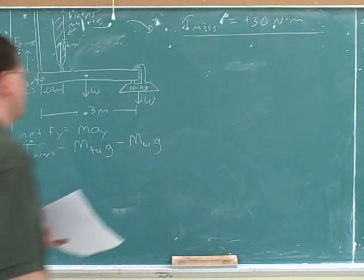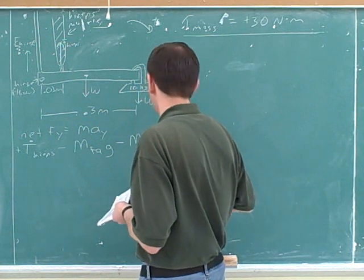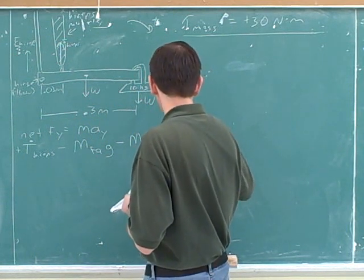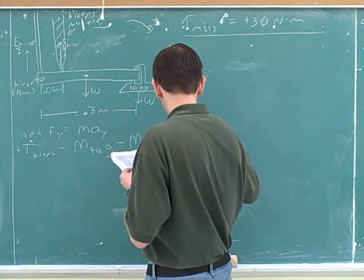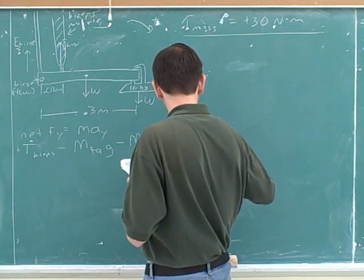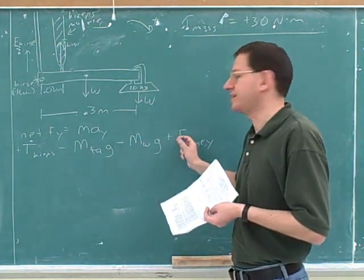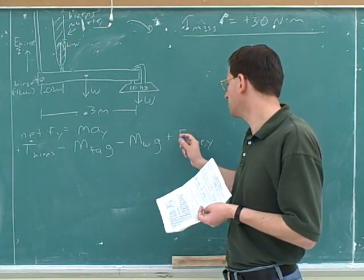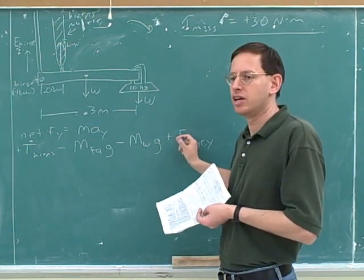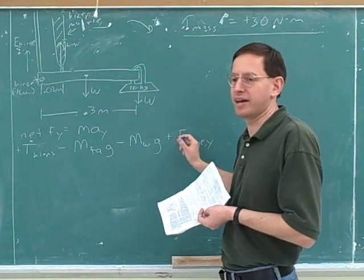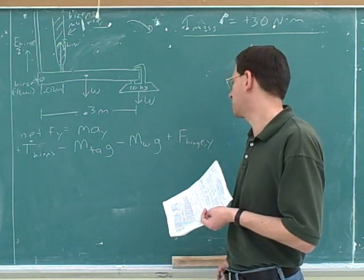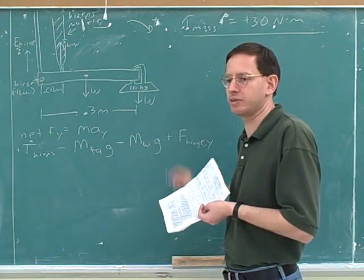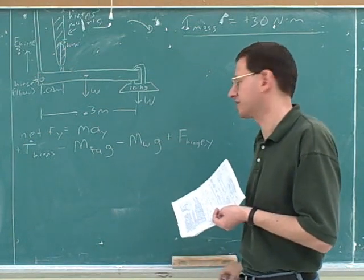We really don't know what direction it's in. The method I would like best here is to just not put a dot on top of this variable, and that means it includes both the magnitude and the sign. So we'll just solve and see whether this comes out positive or negative — that will tell us. We won't decide the sign on our own; we'll see what the equation tells us the sign is.